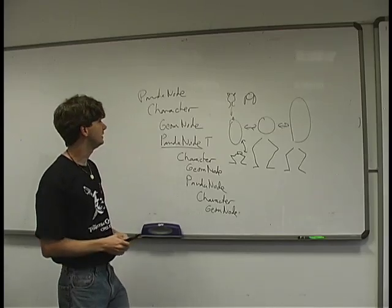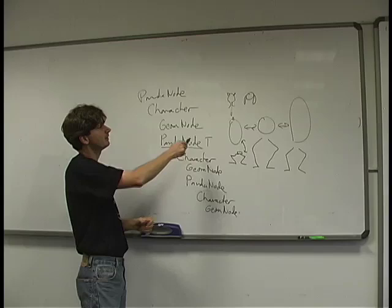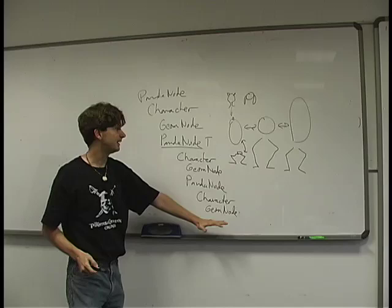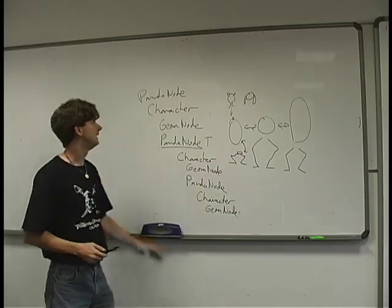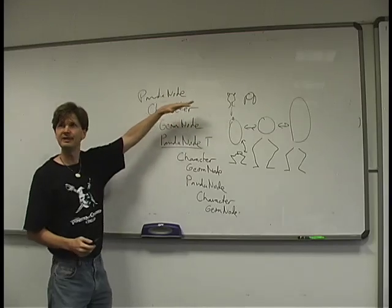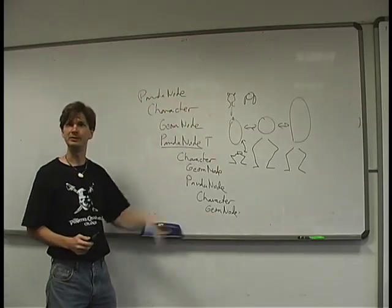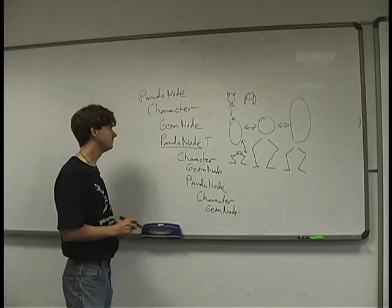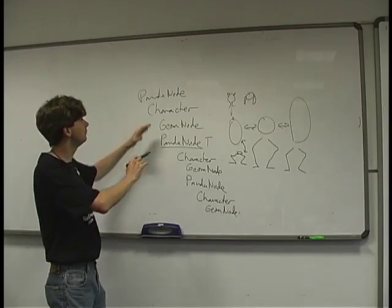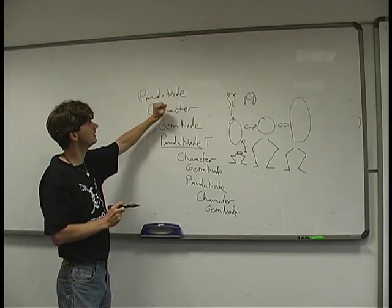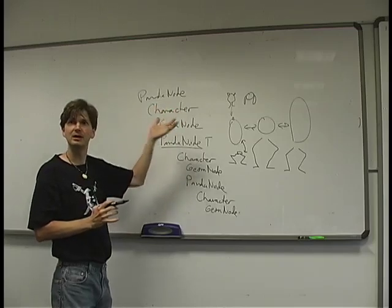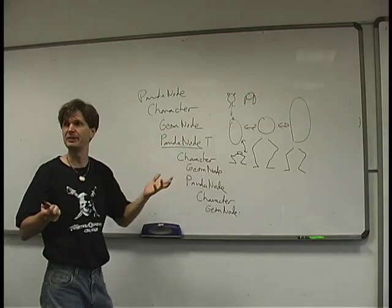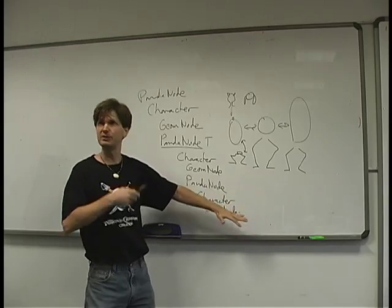In Toontown, there are also LODs on top of the multi-part structure, so there are actually nine different characters that need to play when you call toon.play() — three parts times three LOD levels. But the Actor handles that. Most operations on an Actor have an optional part_name parameter; if you don't specify it, you play on all parts. When you set up your multiple parts, you give each one a name so you can reference individual parts later.